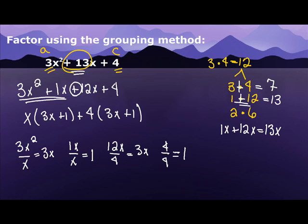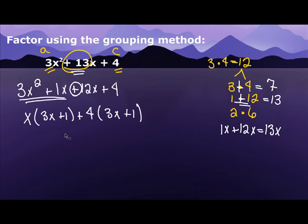Okay, we're halfway there now. The next thing that I notice is that I have 3x plus 1 and 3x plus 1. So I'm going to pull that out. So I'm going to have 3x plus 1.